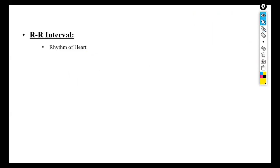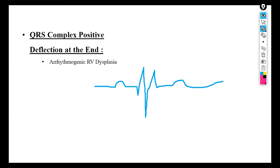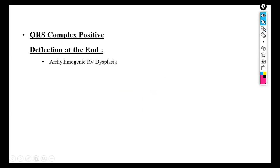QRS complex with a positive deflection at the end is because of arrhythmogenic right ventricular dysplasia (ARVD). In ARVD, the right ventricle has no coordinated rhythm, and this results in a positive deflection at the end of the QRS complex on the ECG.